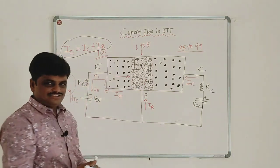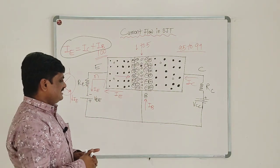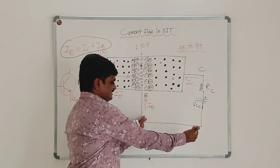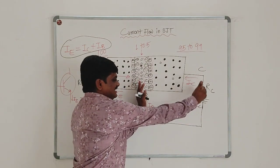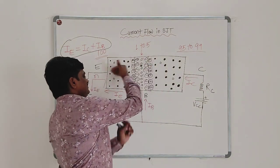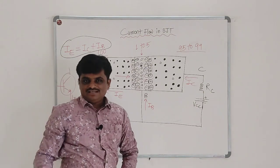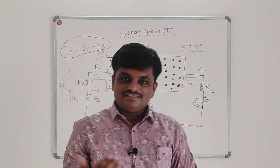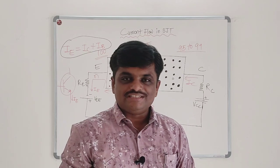If you apply Kirchhoff's current law here, since the emitter current is moving towards the left side, the base current and the collector current combine to form the emitter current. This is how current flows in a BJT. Thank you.